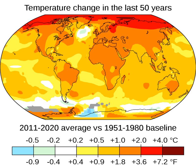Many species become extinct as their environment changes. Climate change threatens people with food and water scarcity, increased flooding, extreme heat, more disease, and economic loss. It can also drive human migration. The World Health Organization is calling climate change the greatest threat to global health in the 21st century. Even if efforts to minimise future warming are successful, some effects will continue for centuries, including sea level rise, as well as warmer and more acidic oceans.